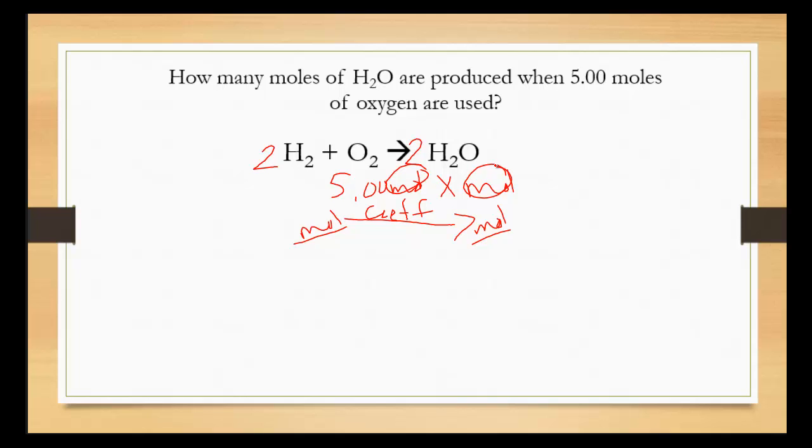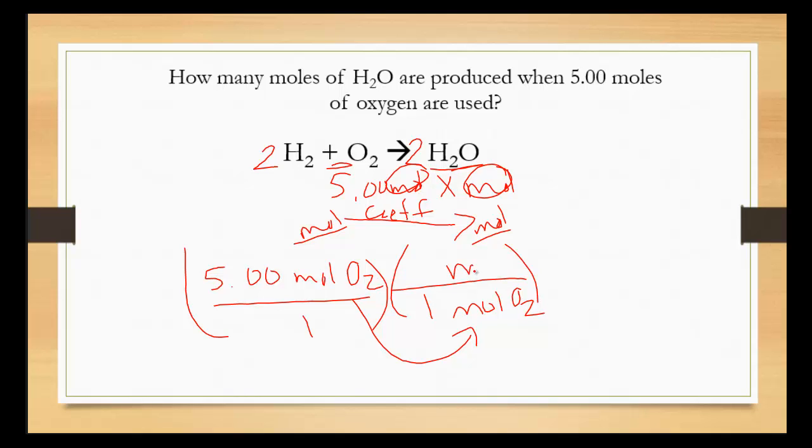I put the number I'm trying to convert over 1. 5.00 moles of O2 over 1. Moles of O2 are on the top. That means I want to put that on the bottom. That's where we're going from. The coefficient is a 1, and where we're going to is H2O. And that coefficient is 2. 5 times 2 divided by 1 is 10.0 moles of H2O. I stop it at 10.0 because I have three significant figures in the question, so I want to make sure to have three in the answer.